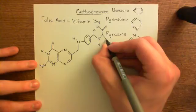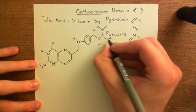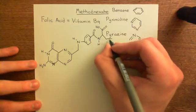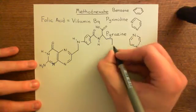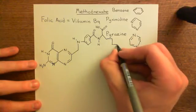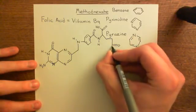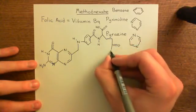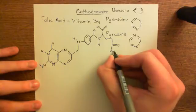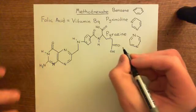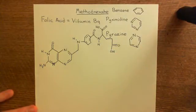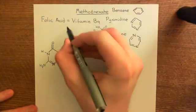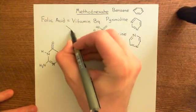We just need to complete the R group of this glutamate. We've got one methylene group, two methylene groups, and then on the end a carboxylic acid group. That now is the structure of folic acid, or vitamin B9.